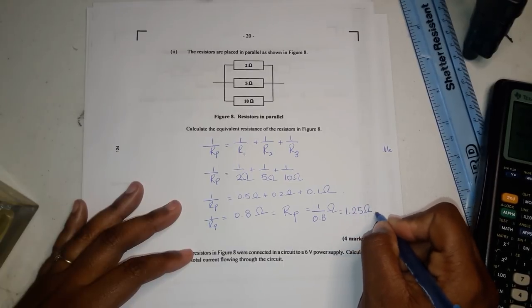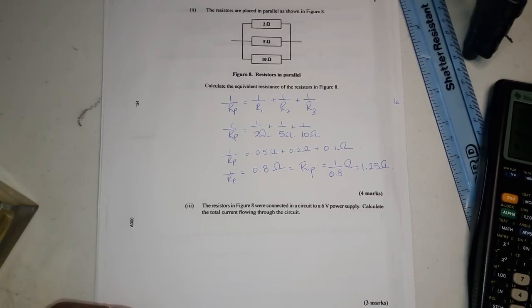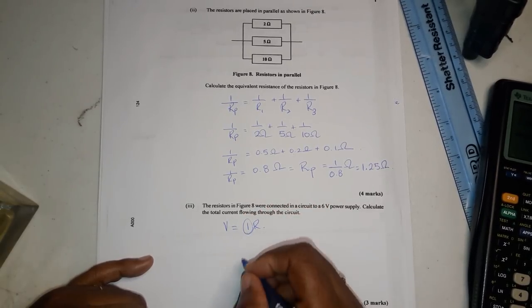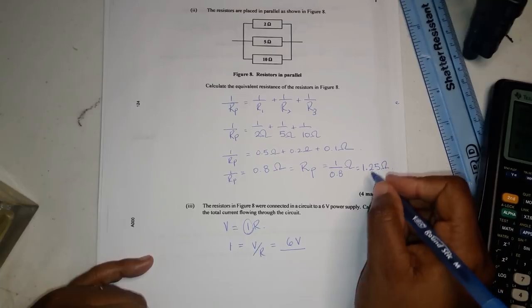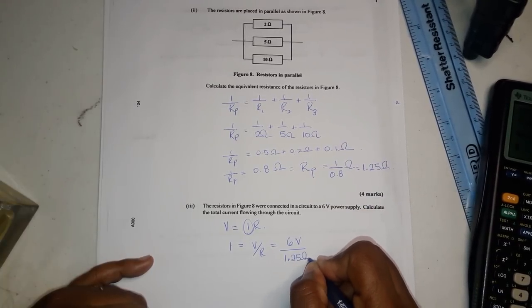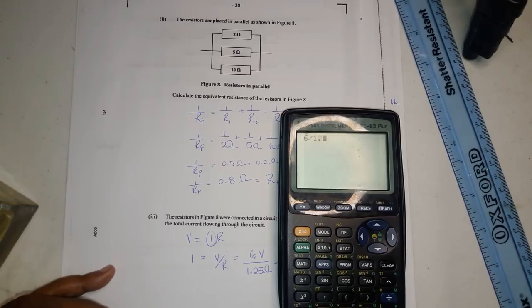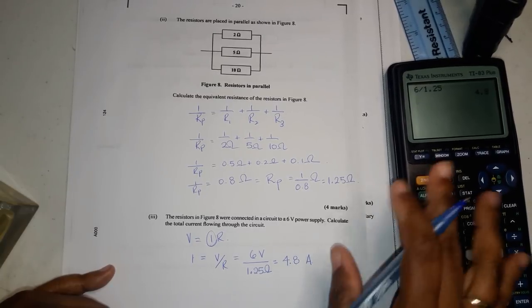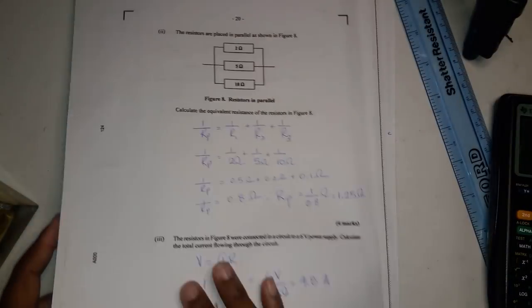The resistors in parallel are connected in a circuit to a six volt power supply. Calculate the total current flowing through the circuit. So we know v equals ir, i being current. So i is therefore equal to v over r. And since v is six volts and the resistance is 1.25 ohms, we just use our calculator and we say six divided by 1.25, which gives you 4.8 amps.